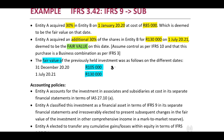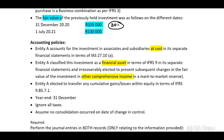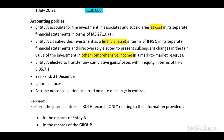The previously held interest is the 30%. Entity A accounts for investments in associates and subsidiaries at cost in terms of IFRS 27. Entity A classifies this investment as a financial asset in terms of IFRS 9 in its separate financial statements and irrevocably elected to present subsequent changes in fair value in other comprehensive income in a mark-to-market reserve. Entity A elected to transfer any cumulative gains or losses within equity in terms of IFRS 9 B5.7.1 at year-end 31 December. Ignore all taxes, assume no consolidation occurred on date of change in control, and perform journal entries in both records relating to the information provided.